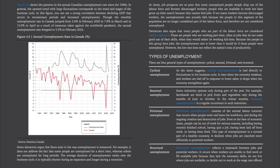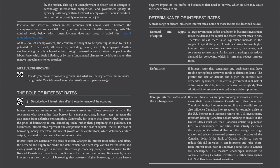Frictional unemployment declines when jobs are matched more efficiently to potential workers. Structural unemployment reflects a mismatch between jobs and potential workers. It occurs when workers are unable to find work or fill available jobs because they lack the necessary skills, do not live where jobs are available, or decide not to work at a wage rate offered by the market. This type of unemployment is closely tied to changes in technology, international competition, and government policy. It typically lasts longer than frictional unemployment because workers must retrain or possibly relocate to find a job. Frictional and structural factors in the economy will always exist; therefore, the unemployment rate can never fall to zero, not even in times of healthy economic growth. The minimal level below which unemployment does not drop is called the natural unemployment rate.